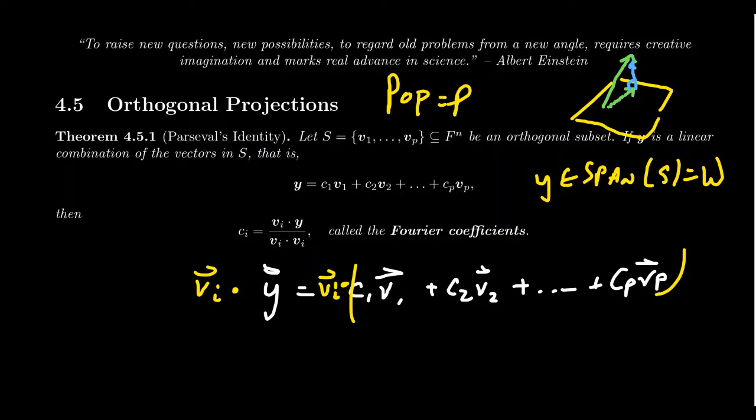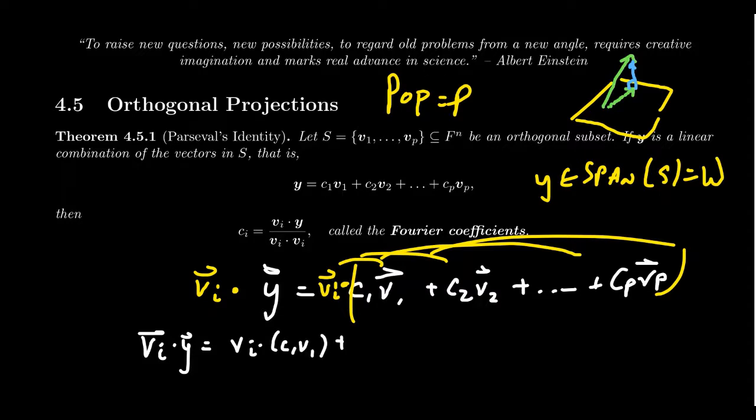Well, the inner product, like other multiplications, will distribute over vector addition. We can also pull out scalars from the right factor. So this would look like VI dot Y and we're going to end up with VI dot C1 V1 all the way down to VI dot CP VP.